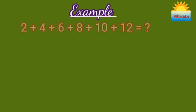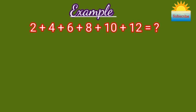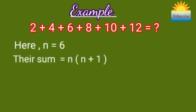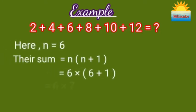Let's find the sum of even natural numbers from 2 to 12. Here the number of even natural numbers is 6, so n is 6. Their sum is n(n+1), that is 6 into 6 plus 1, which equals 6 times 7, which is 42.